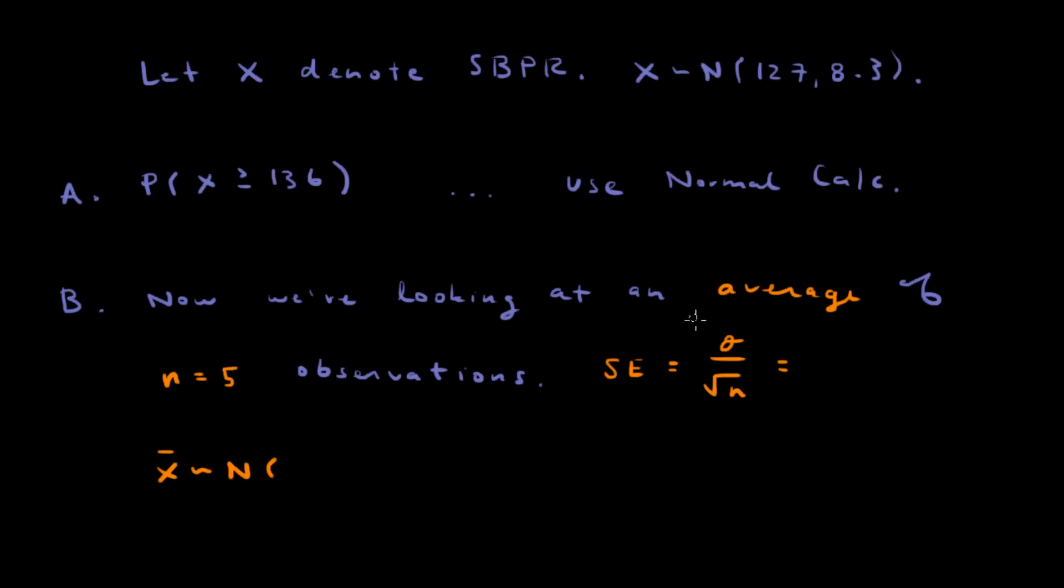This is the formula for standard error when we're dealing with means. So sigma is 8.3, and the sample size is 5, and this gives you 3.712.